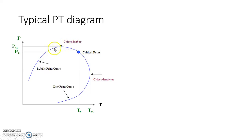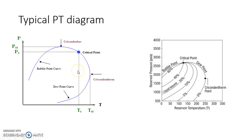The critical point can be on one side of both the points or on the other side. When it is on this side, it is termed to be on the saturated liquid line, that is the bubble point curve. When it is on this side, it is termed as being on the dew point curve. This is typically a diagram for a reservoir where this is 100% liquid and this is 100% vapor.